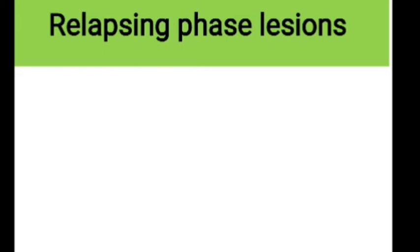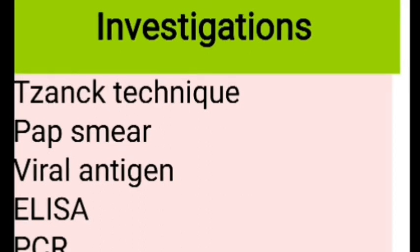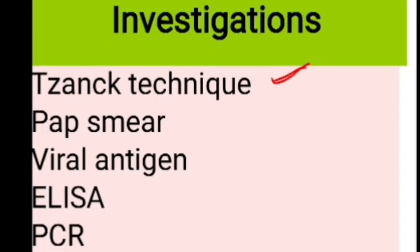Investigations include morphological testing, serological testing, or viral isolation. In morphological testing, the Zank technique identifies multinucleated giant epithelial cells from material taken from the base of the vesicle; a Pap smear can also be done. Viral antigen isolation, ELISA, or PCR can be performed. However, diagnosis is usually based on clinical manifestation.